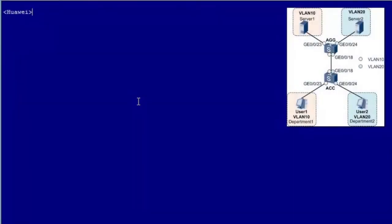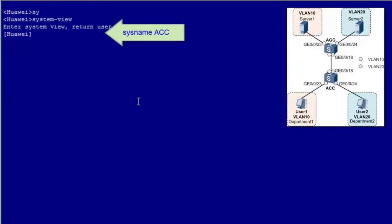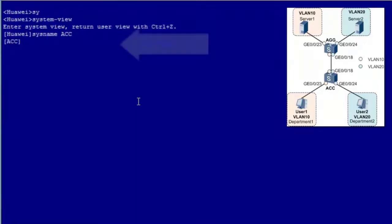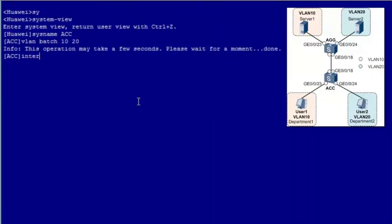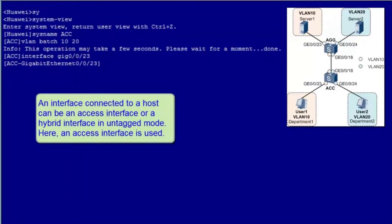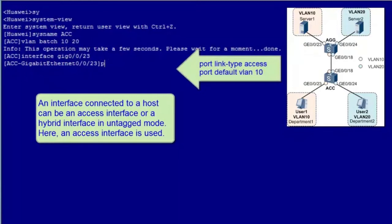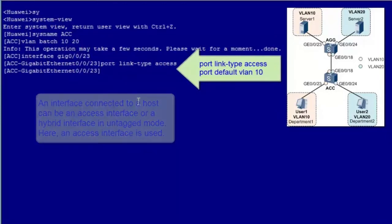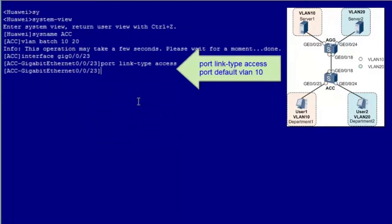Now I will give a demonstration. First, configure the ACC — enter the system view and name the switch ACC so that we can easily identify it. Then create VLAN 10 and VLAN 20. Configure GE0/0/23, which is connected to user 1, as an access interface. An interface connected to a host can be an access interface or a hybrid interface in untagged mode — here, an access interface is used. Then add the interface to VLAN 10.